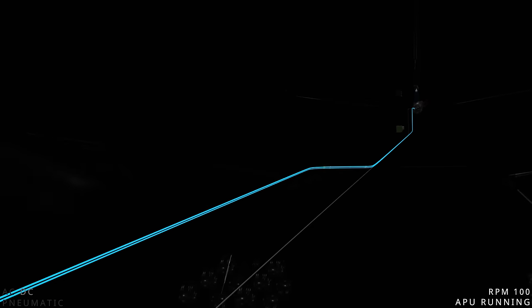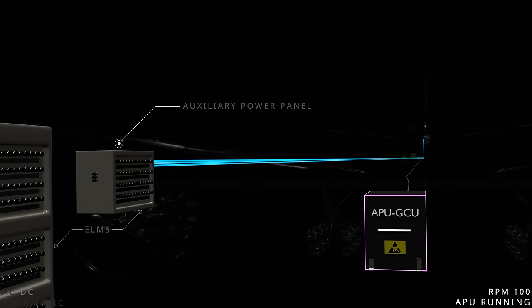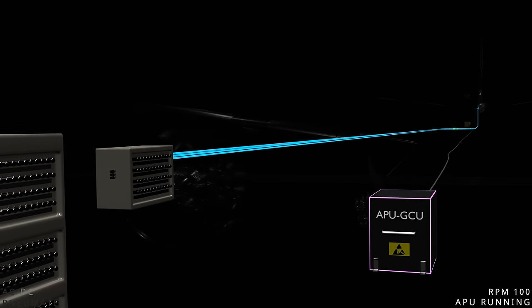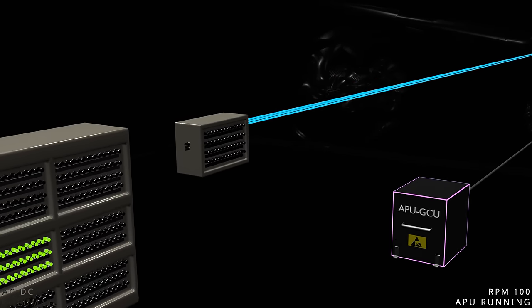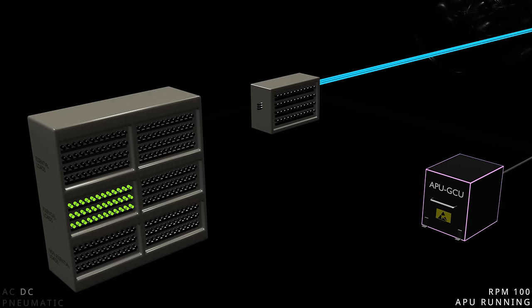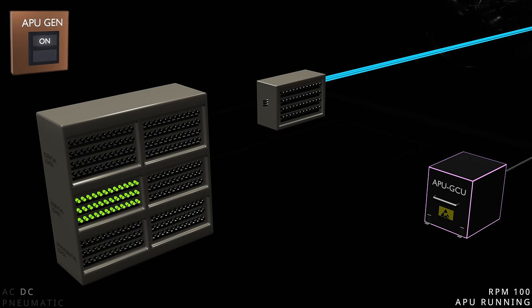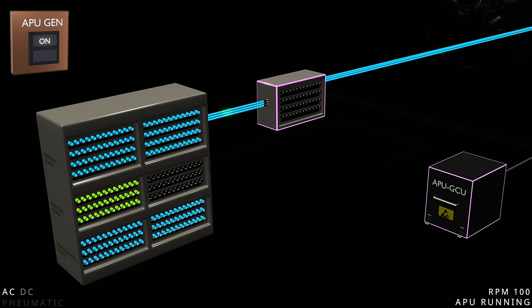The generator output reaches the auxiliary power panel, part of the electrical load management system. When the APU generator switch is selected, the generator control unit closes the contactor inside the panel and the power is available for distribution. The load management system uses the generator power to activate the AC buses.